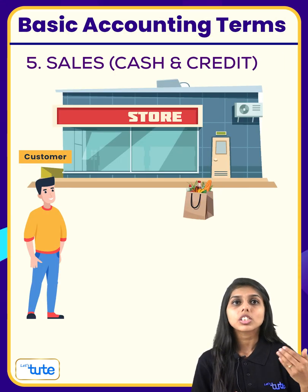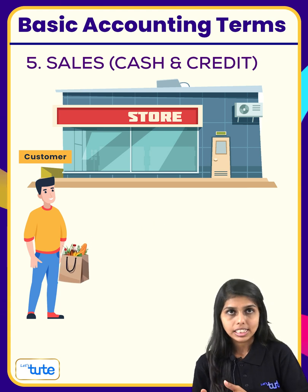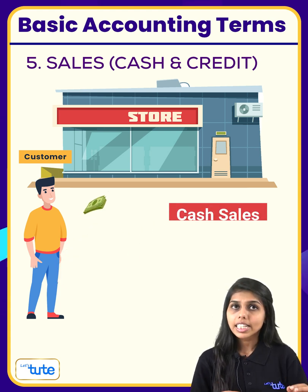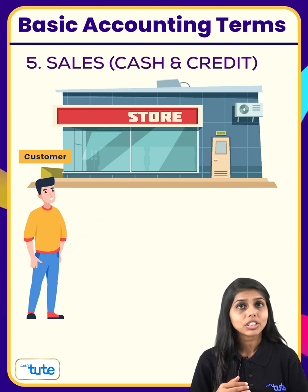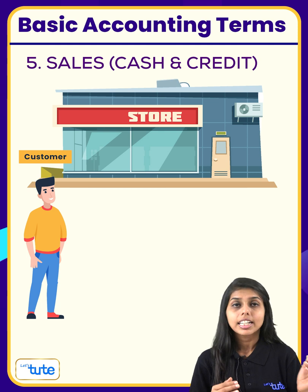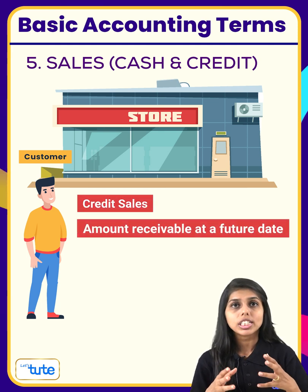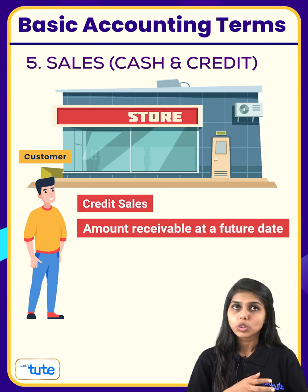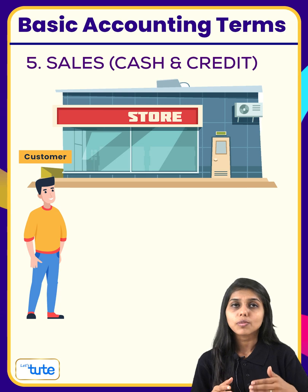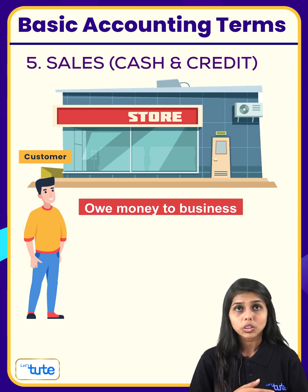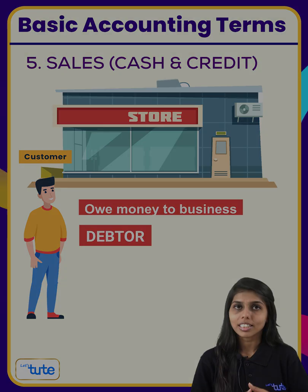Similarly, when goods are sold, it is accounted as sales. It is cash sales when payment is received immediately, and credit sales if the amount is receivable at a future date. In this case, the customer who owes money to the business is known as a debtor.